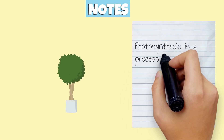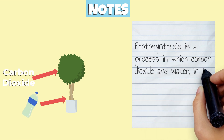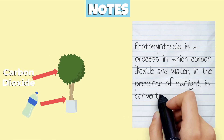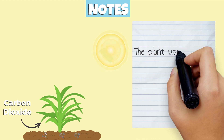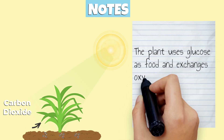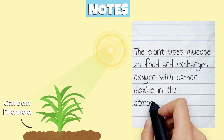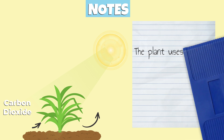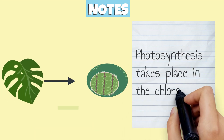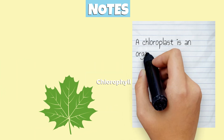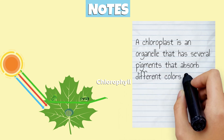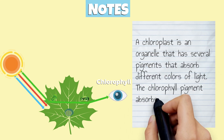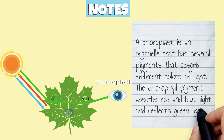Let's review what we just learned. Photosynthesis is a process in which carbon dioxide and water, in the presence of sunlight, are converted into glucose and oxygen. The plant uses glucose as food and exchanges oxygen with carbon dioxide in the atmosphere. Photosynthesis takes place in the chloroplast, which is an organelle that has several pigments that absorb different colors of light. The chlorophyll pigment absorbs red and blue light and reflects green light.